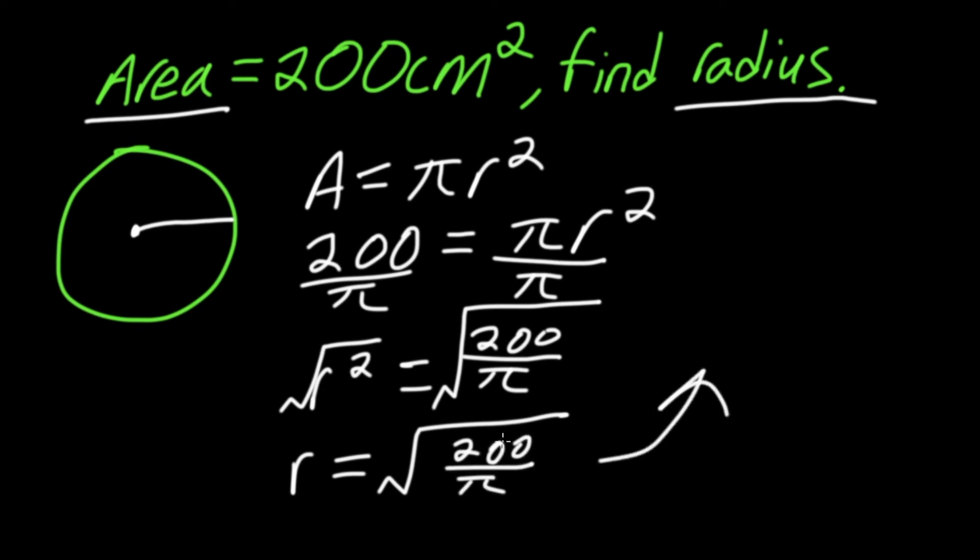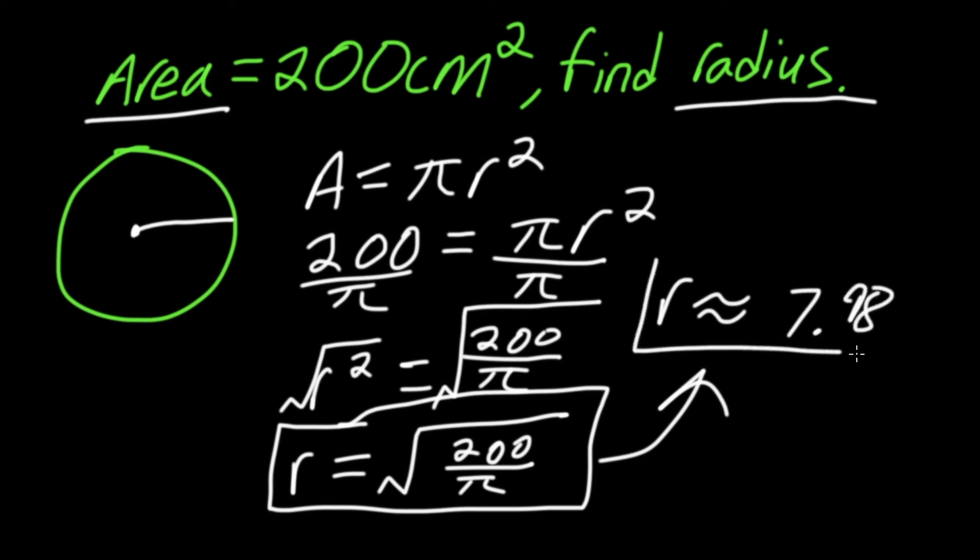Here, this is an acceptable answer, but if you want your answer as a decimal, you can type this straight into your calculator. That will give you r ≈ 7.98. So in this problem, our radius is approximately 7.98 centimeters.